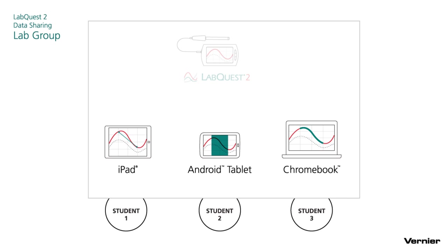The students work together to collect the data and have that shared experience, and then they move into the individual experience of analyzing the data. This is the real promise of having individual student screens, because the students can do the critical thinking and analysis on an individual basis.